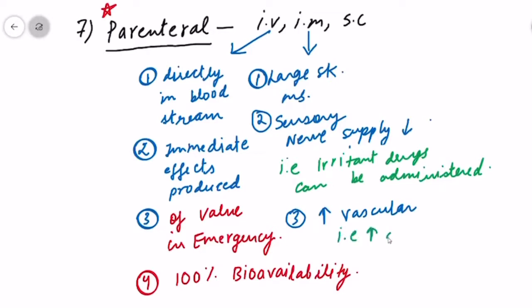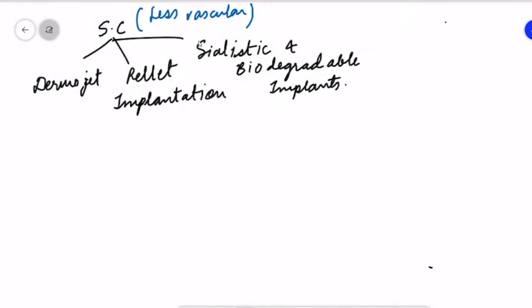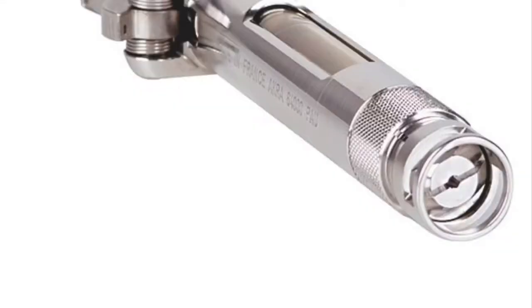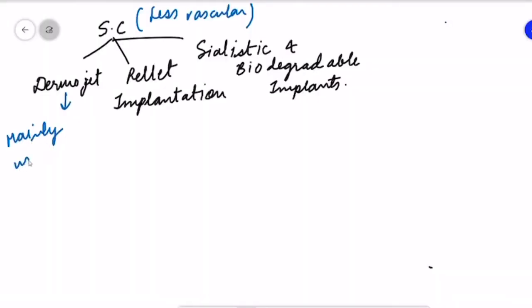Now we see subcutaneous administration, which is less vascular and has more sensory nerve supply. It has three major routes: dermojet, pellet implantation, and salistic and biodegradable implants. First is dermojet. As you can see, it has a minute orifice from which the drug comes out with very high velocity. This is mainly used in inoculations, meaning vaccinations, and the drug gets deposited in the subcutaneous tissue.